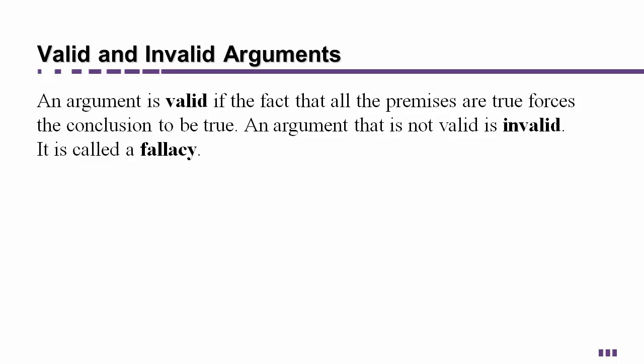Now a valid argument is valid if the fact that all the premises are true forces the conclusion to be true. If all the little bits and pieces in the first part are all true and that forces the conclusion to be true then it is a valid argument. Otherwise it is invalid and it is called a fallacy.